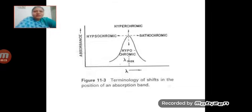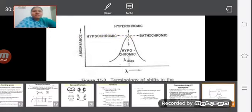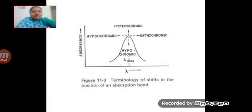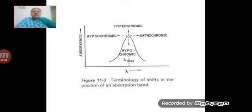Look at the figure. Here the y-axis is absorbance versus x-axis is the wavelength. Lambda max — this is the point where maximum absorption occurs in this Gaussian shape of peak. The wavelength at which maximum absorption occurs is called lambda max.